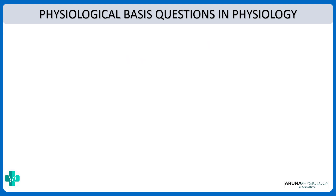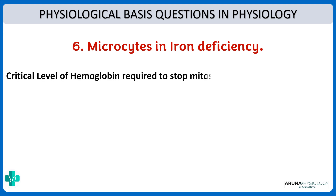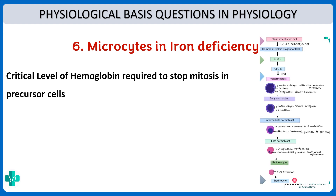Next: why are there microcytes in iron deficiency? In iron deficiency the typical blood picture is microcytic hypochromic anemia — but why are the RBCs small? We need a critical level of hemoglobin to stop mitosis in the precursor cells. During erythropoiesis, as mitosis proceeds, the size of the cell decreases.